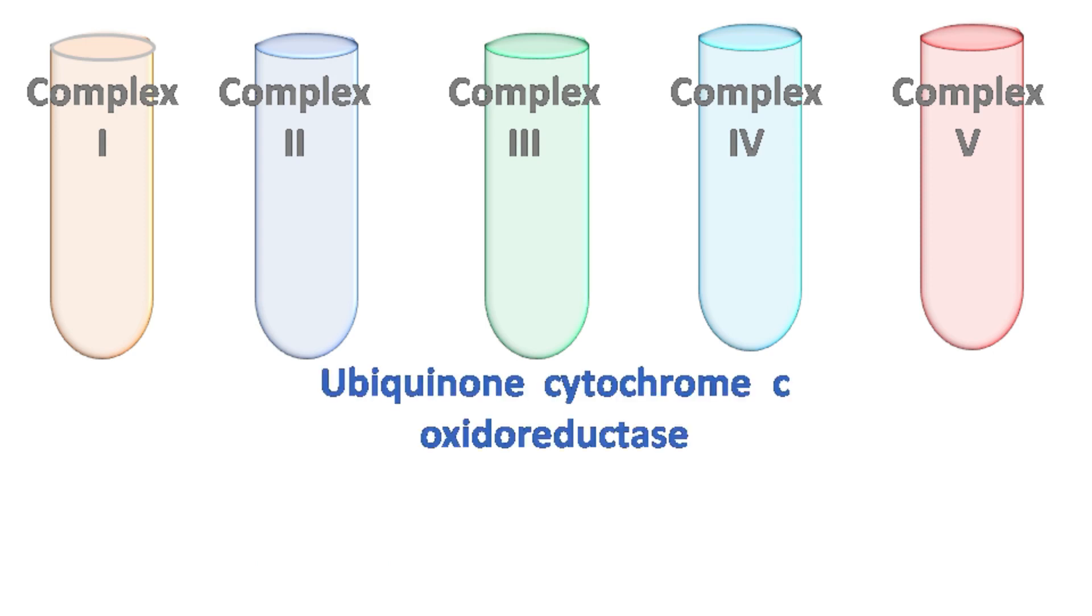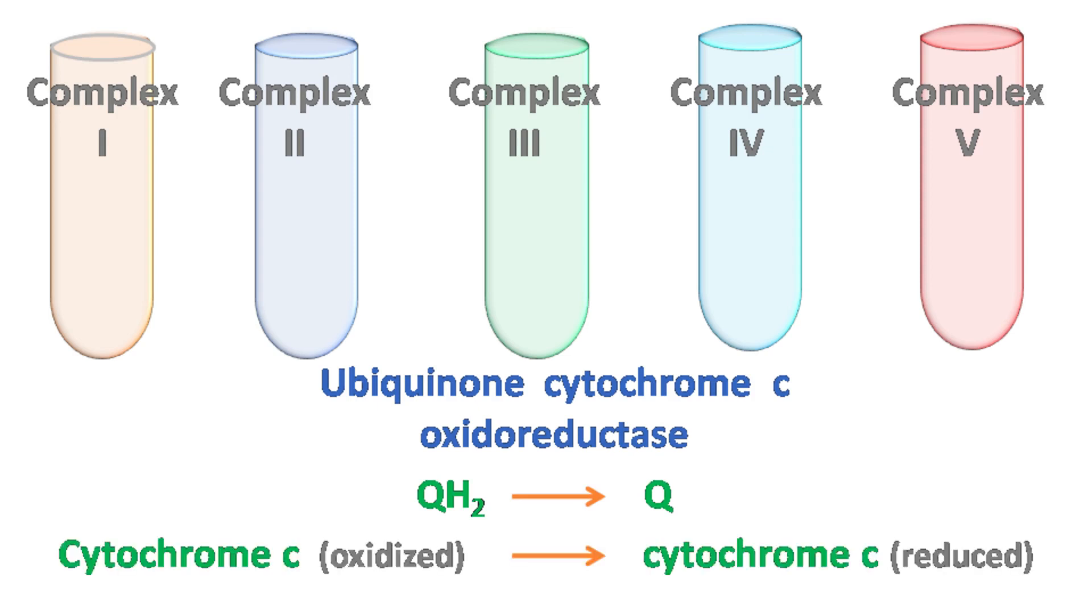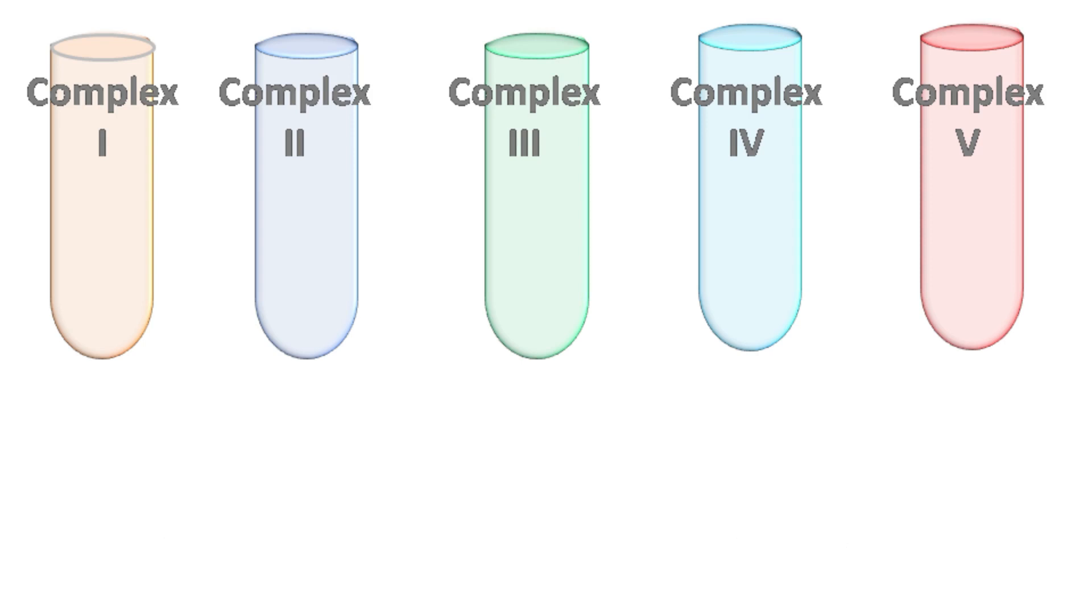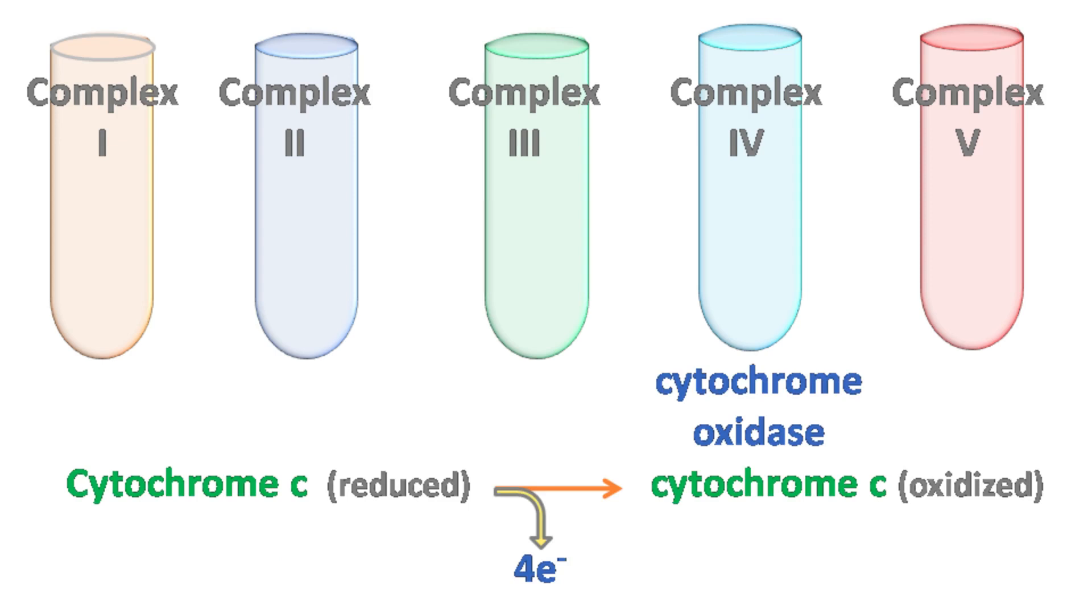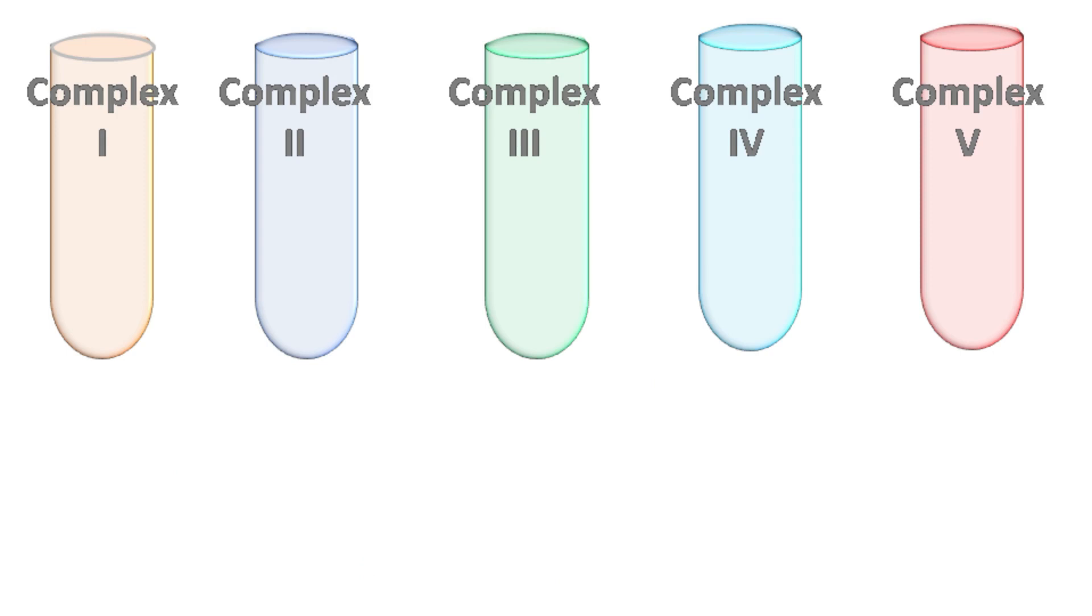Complex 3 is known as cytochrome BC1 complex, also known as ubiquinone cytochrome C oxidoreductase. It oxidizes QH2 and the electrons removed during this process are donated to cytochrome C, and finally cytochrome C gets reduced. Complex 4 is known as cytochrome oxidase. It removes electrons from reduced cytochrome C and donates them to molecular oxygen, which forms water.